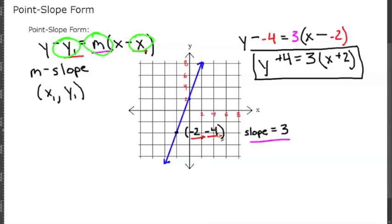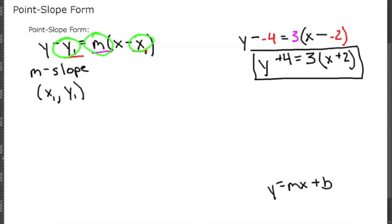If we were to convert this to slope-intercept form, we would need to know the slope and the intercept. So to get that into the form of y equals mx plus b, we're going to simplify.